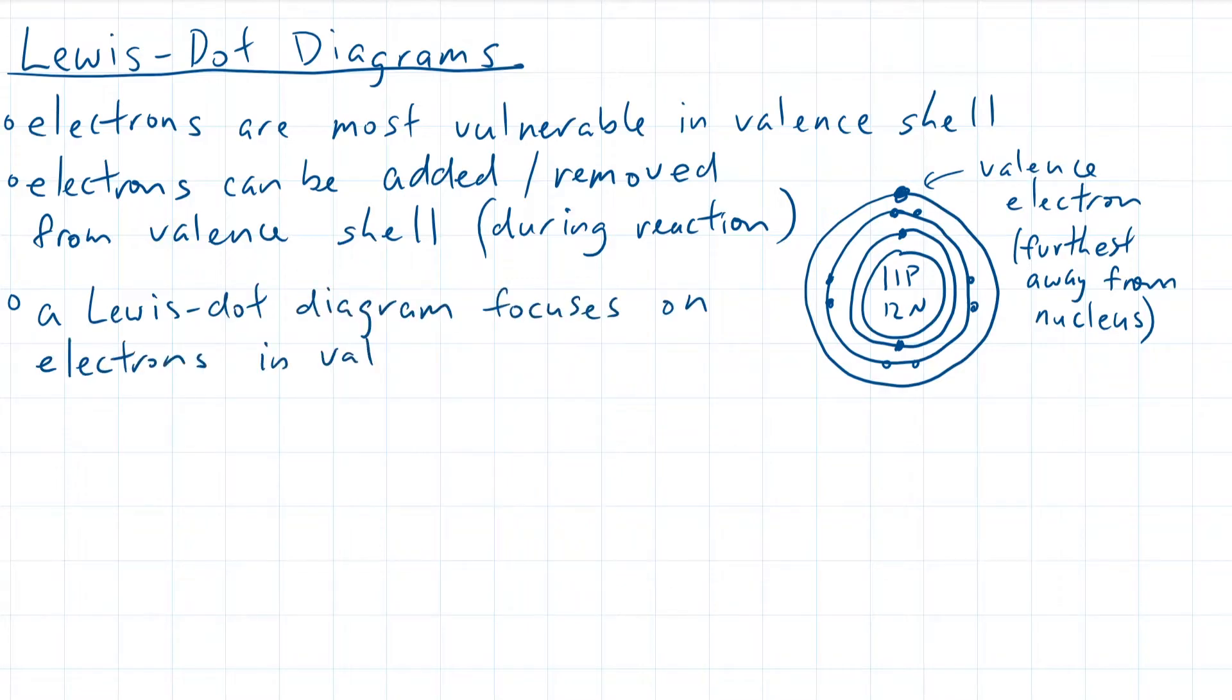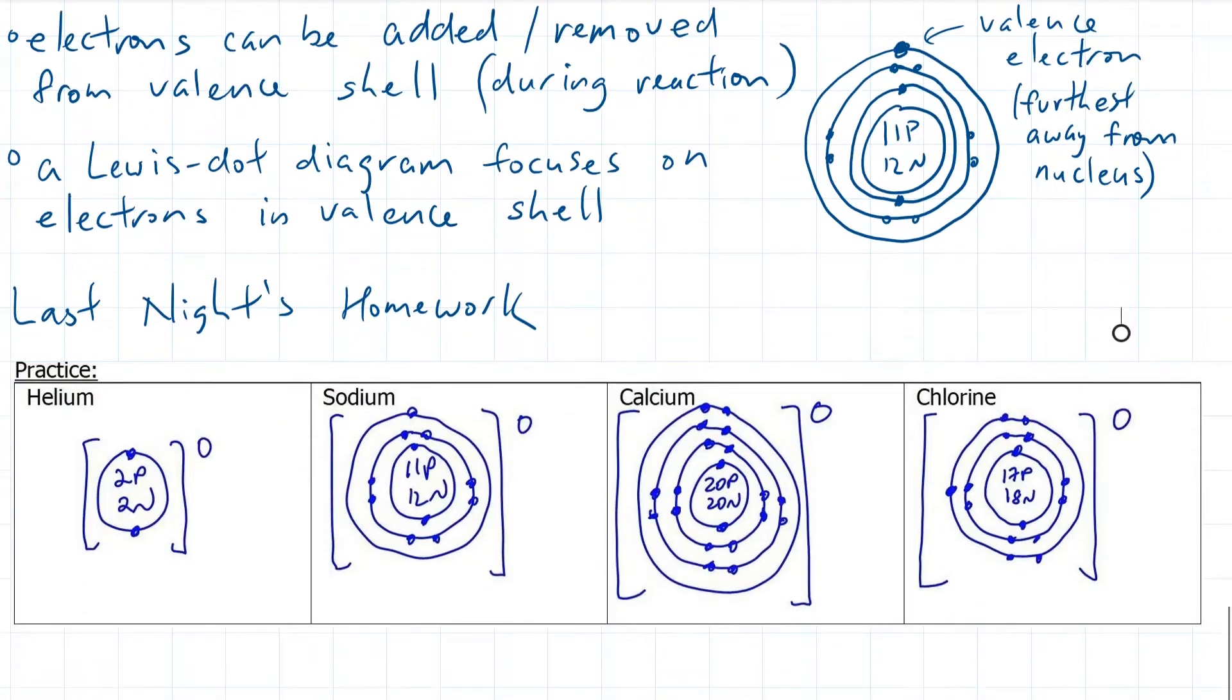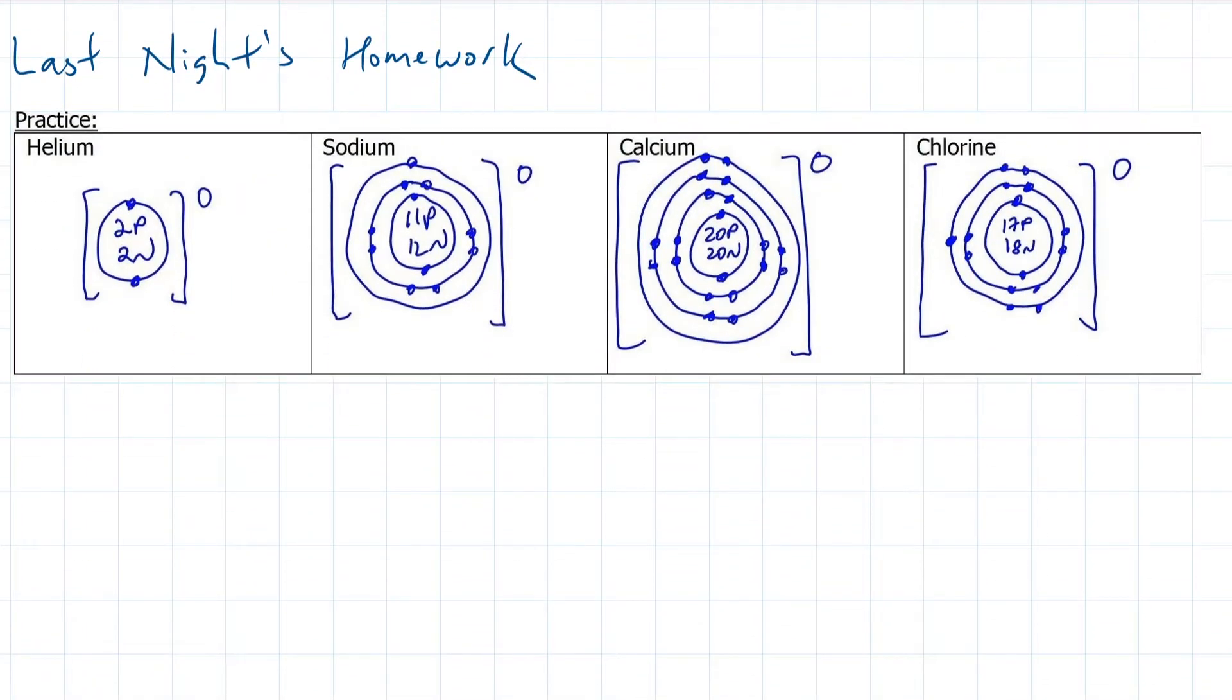In general, only the valence shell is important when describing a chemical reaction, so let's see how to draw a Lewis dot diagram based upon yesterday's homework. First, we start with the atomic symbol. For helium, it is capital H, lowercase e. Helium has two valence electrons, so the Lewis dot diagram will have two dots on top.